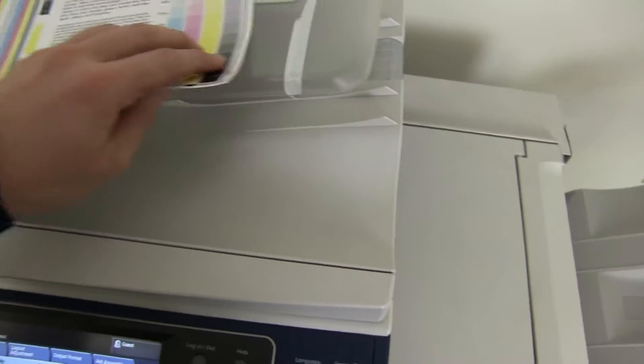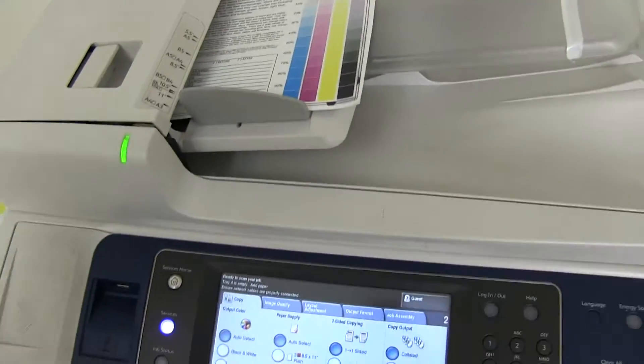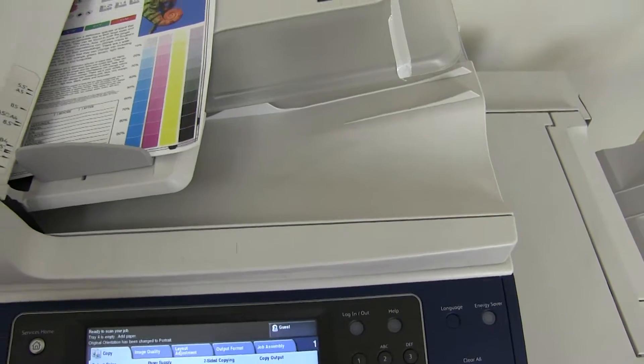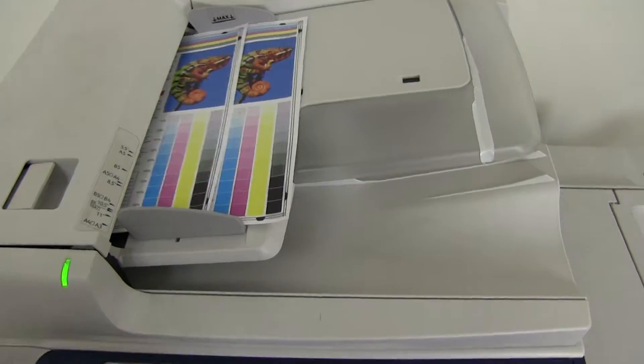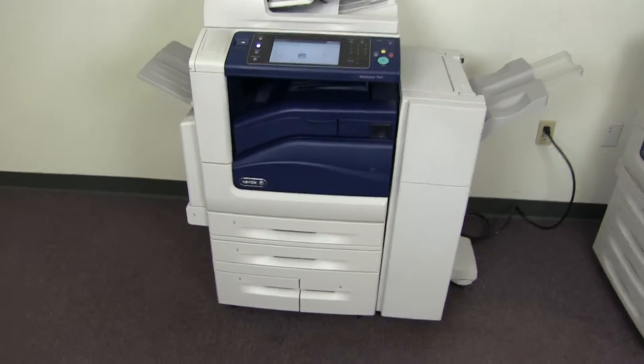And now we'll go ahead and test out the document feeder as well as the stapling feature on this finisher. So we'll place our two test copies in the feeder face up and we'll go ahead and do a double staple. There we have our document feeder working properly.